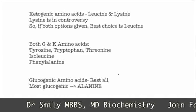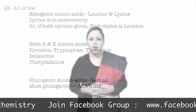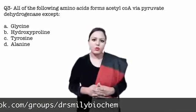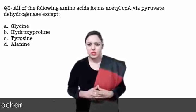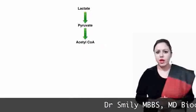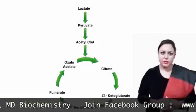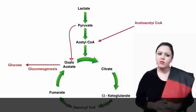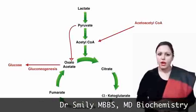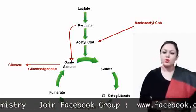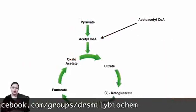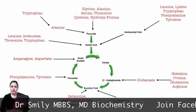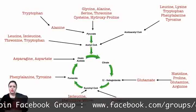Remaining amino acids are in the glucogenic category, with alanine being the most glucogenic. Question number 3: all of the following amino acids form acetyl-CoA via pyruvate dehydrogenase except — options are glycine, hydroxyproline, tyrosine and alanine. Six amino acids enter at the level of pyruvate: glycine, alanine, serine, threonine, cysteine and hydroxyproline.